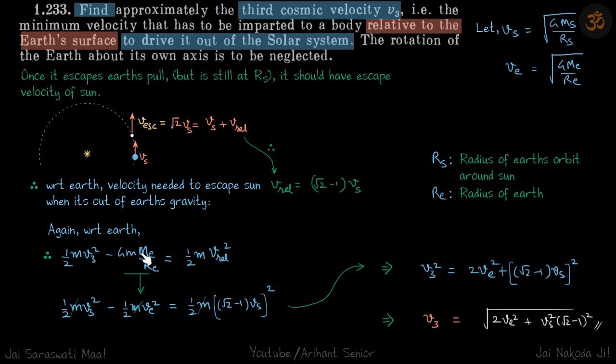So from here, GMMe by Re, we can put as velocity Ve. So we are just using this terminology. So this is the orbital velocity of an object around the earth at a distance Re. So anyway, GMMe by Re will become Ve square, so this becomes mVe square, actually this half should not be there. Yes. So from this equation, if we just simplify it, we will get the value of V3, which is this, which is our answer. So yeah, that's all.